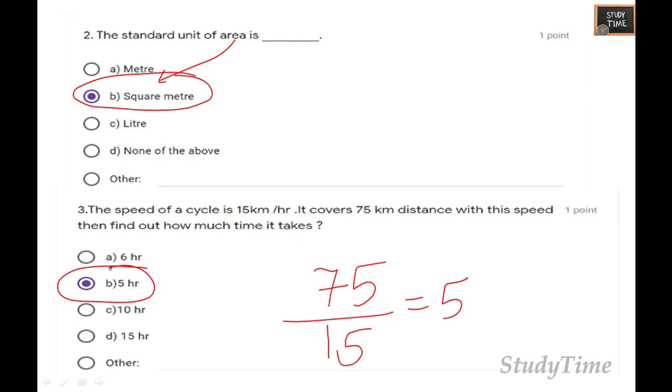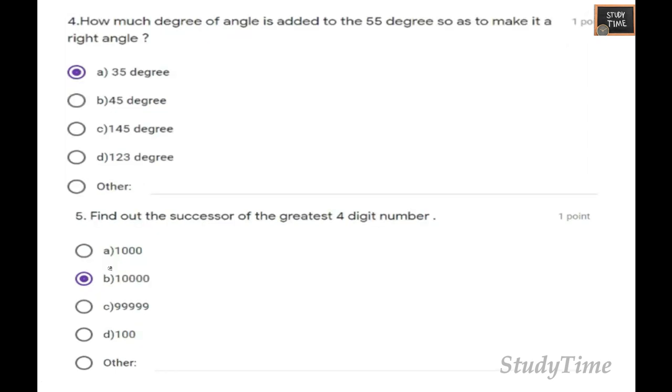Next, how much degree of angle is added to 55 degrees so as to make it a right angle? So 55 plus what gives 90 degrees? The answer is 35 degrees.